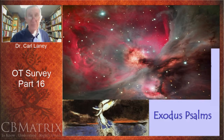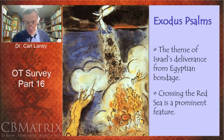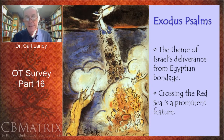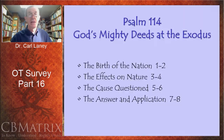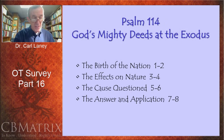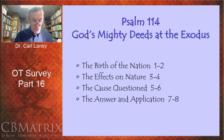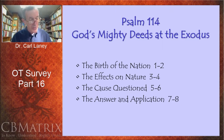The Exodus Psalms focus on the theme of God's deliverance from Egyptian bondage. The crossing of the Red Sea — or the Reed Sea — is a prominent feature of this kind of psalm. Over and over again in Scripture, we find references to the Exodus, this great deliverance of God's people from Egypt. One of the Exodus Psalms is Psalm 114, which is one of the Hallel Psalms — the psalms sung during the Passover. Psalms 113–118 were sung during the Passover meal.